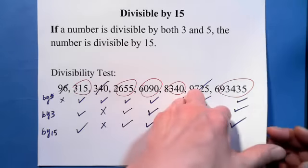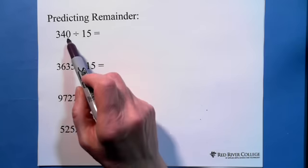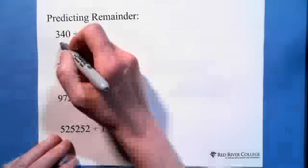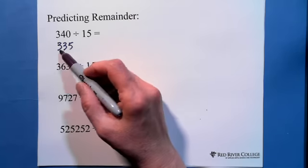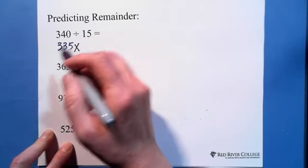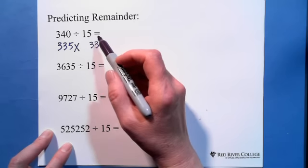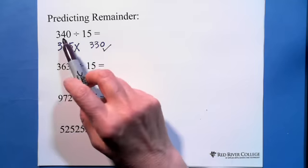Now let's do the application: predict the remainder. First, we check the last digit — it must be divisible by 5. The last digit is 0, so it works for 5, but 3 plus 4 is 7, which is not divided by 3. So we go back: first try 335 — it's divided by 5, but digit sum of 335 is not a multiple of 3. Back again to 330: last digit is 0, divided by 5, and 3 plus 3 is 6, divisible by 3. So 330 is divided by 15, and the remainder is 340 minus 330, which is 10.